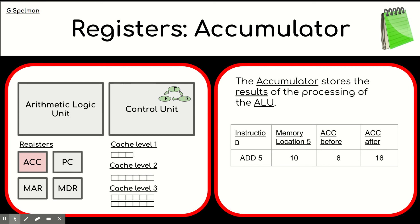10 is in memory location five. So 10 will be added to six, which will give 16. So once the ALU has carried out this calculation, it will put 16 into the accumulator. And that's why we say the accumulator stores the results of the processing of the ALU.